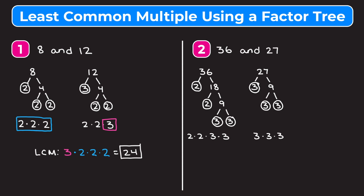Now we figure out how many 2s and how many 3s we'll have in our answer. Twos only show up in the prime factorization for 36, and we have two 2s, so we put two 2s in our least common multiple. Threes show up in the prime factorization for both 36 and 27, but they show up more in 27 — three times — so we pick the higher count and multiply by three 3s.